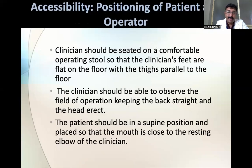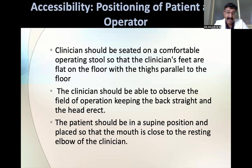Coming to accessibility — positioning of the patient and operator. The clinician should be seated on a comfortable operating stool so that the feet are flat on the floor with thighs parallel to the floor. The clinician should be able to observe the field of operation, keeping the back straight and head erect. The patient should be in a supine position, placed so that the mouth is close to the resting elbow of the clinician.